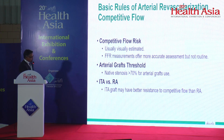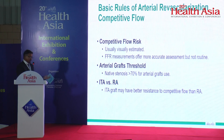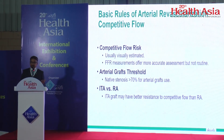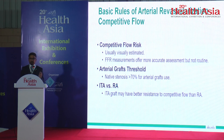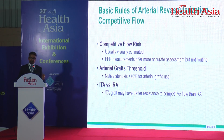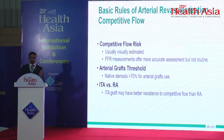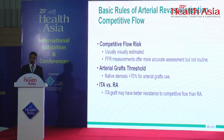If you must graft a borderline lesion, the internal thoracic artery has better resistance to competitive flow than the radial artery. Our internal mammary arteries in South Asia are smaller than Caucasians', especially in women. Nevertheless, competitive flow risk is real, and before placing an arterial graft, you must assess whether the lesion is truly significant enough.